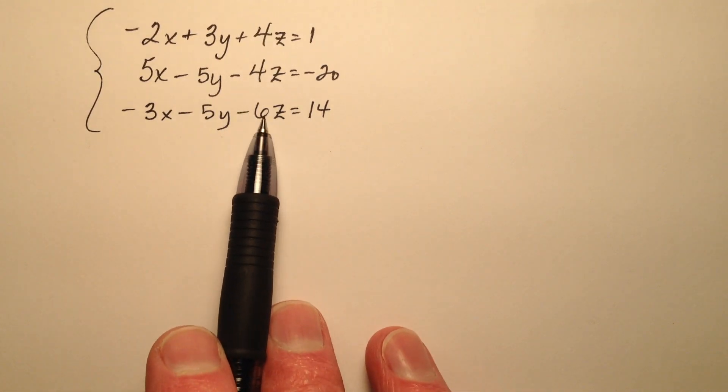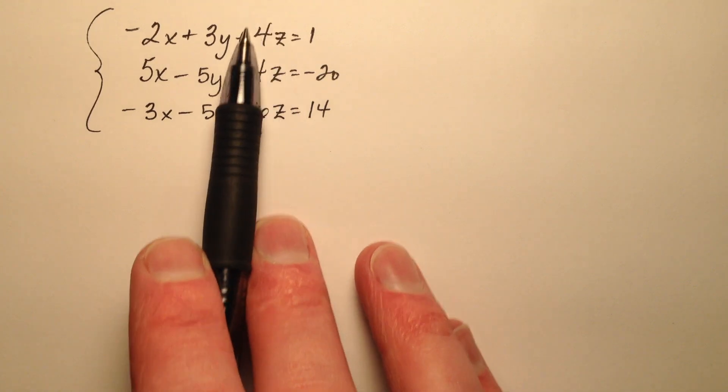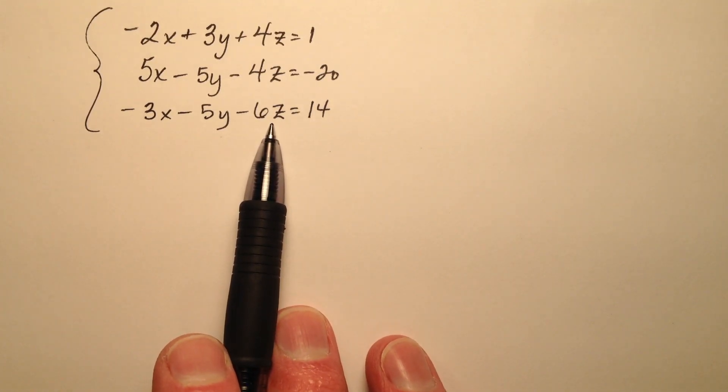And the z's, a 4 and a 4 and a 6, that looks pretty good. So it looks like our z's are going to be the best candidate to use for elimination.